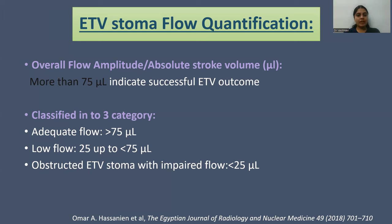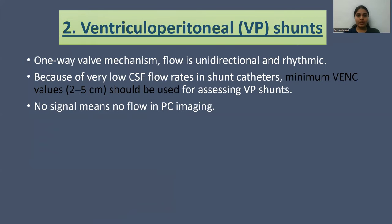ETV stoma flow is classified into three categories: adequate flow, which is more than 75 microliters; low flow, which is 25 up to less than 75 microliters; and obstructed ETV stoma with impaired flow, which is less than 25 microliters.